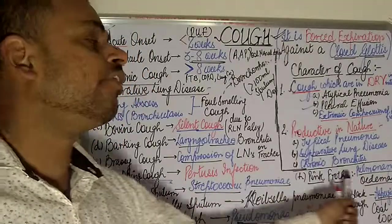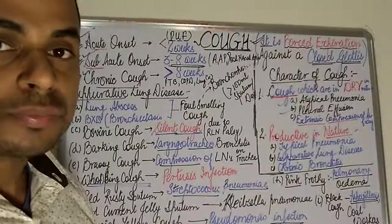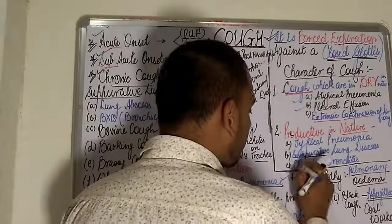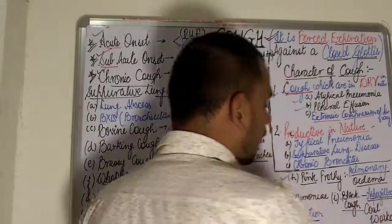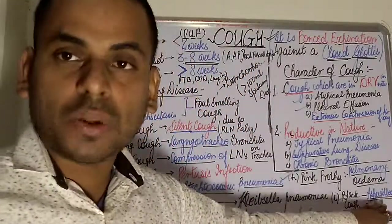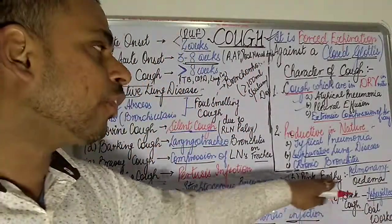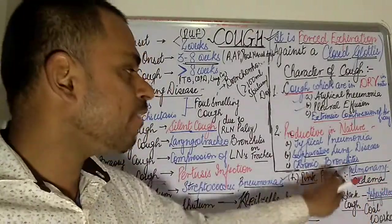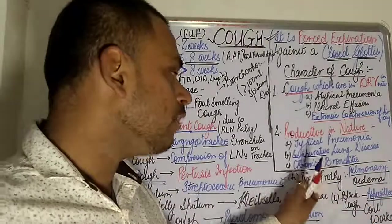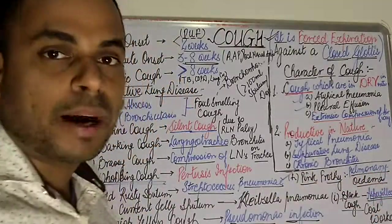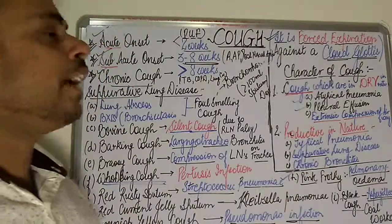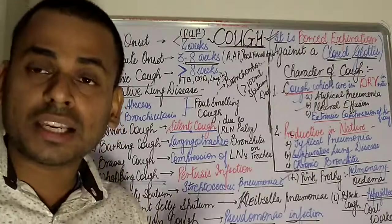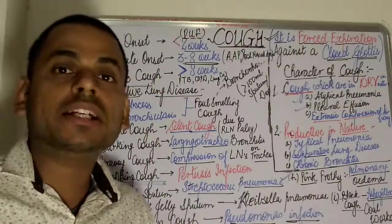Pink frothy sputum is mostly seen in pulmonary edema. Black colored cough is seen in aspergillosis and in coal workers. A helpful mnemonic is PFPO — pink frothy sputum found in pulmonary edema. This was a short review of the different colors and varieties of cough.